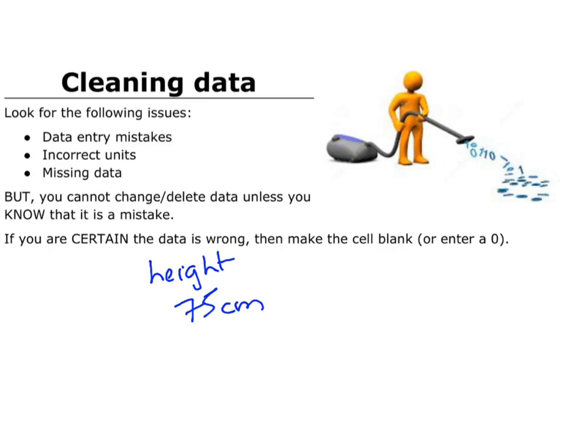So that value is probably wrong. But I don't know for certain. It might be that that person actually is only 75 centimetres tall and they, for example, have dwarfism. So if I don't know for certain, I leave that data alone. I would not touch it whatsoever.